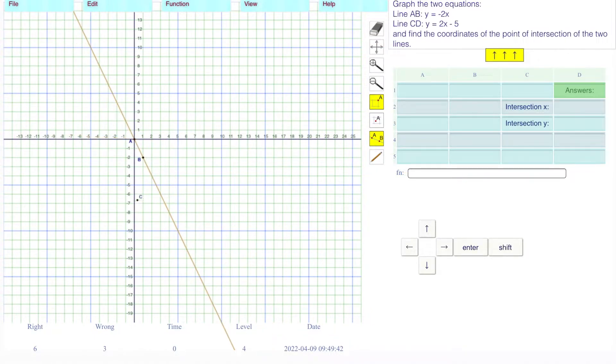For the other equation, the b value is negative 5. The slope is positive 2. We're going to go over 1 and up 2. 1, 2, like that.